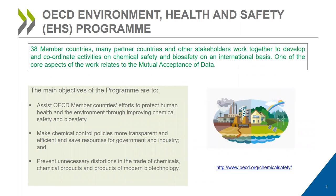The OECD Environment, Health and Safety Program is our program on chemical safety and biosafety. Within the program, we work with member countries, partner countries, and stakeholders to improve protection of human health and the environment from chemicals and in regards to biosafety. Along with improving this protection, efforts are made to make chemical control policies more transparent and efficient and to save resources for government and industry.